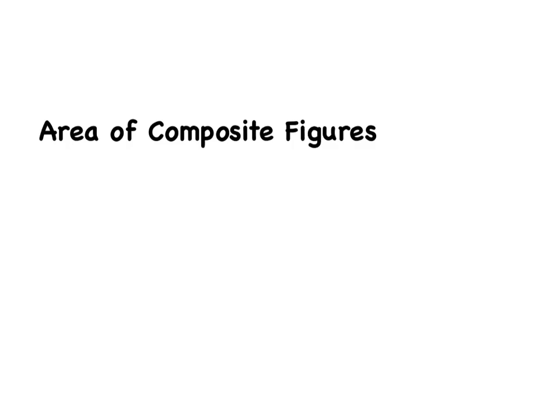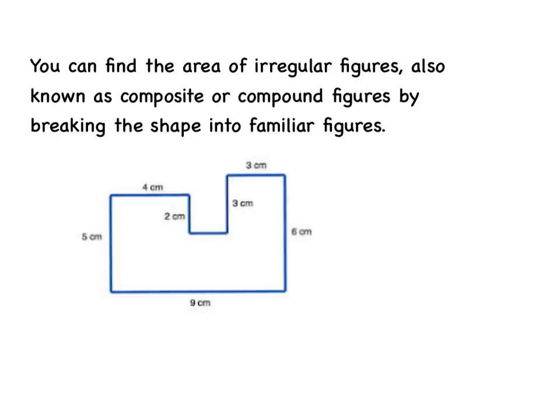Area of composite figures. An irregular figure is a figure that the shape is not familiar to us. So for example, this is an irregular figure because it's not a rectangle, though we do see sort of rectangles. It's not a triangle, it's not a trapezoid or anything like that, so we call it an irregular figure. You can find the area of irregular figures that are also known as composite or compound figures by breaking it into familiar figures.